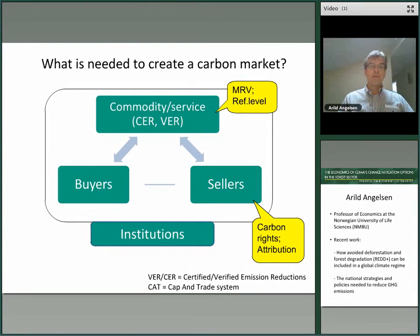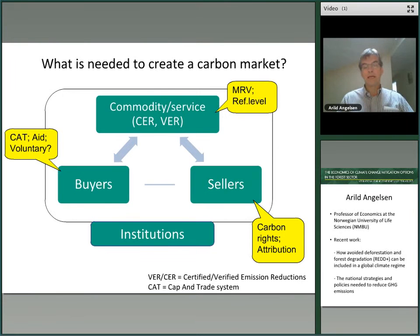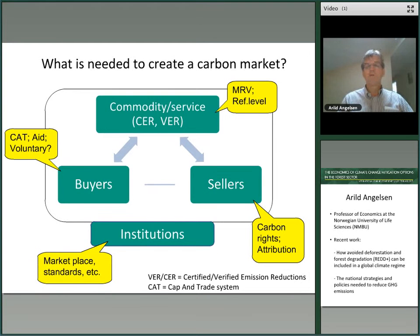The third element is the buyers. The original idea was to have a cap-and-trade system like in the Kyoto Protocol. That has not happened — maybe it will not; we'll see what happens in Paris at the end of this year. More than roughly 90% of funding has come from development aid, and then a small amount from the voluntary market. Finally, you need institutions with rules, standards, and verification so we don't get fake emissions — for example by setting reference levels incorrectly or through fraud, as we have seen in this market and others.